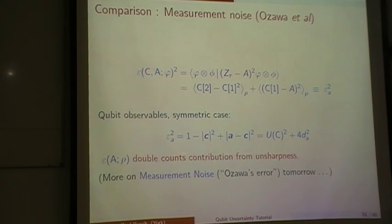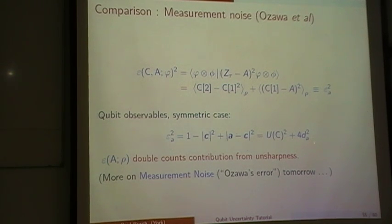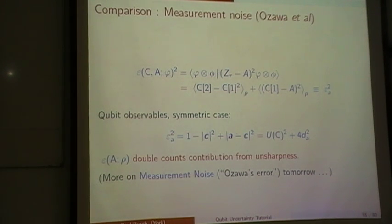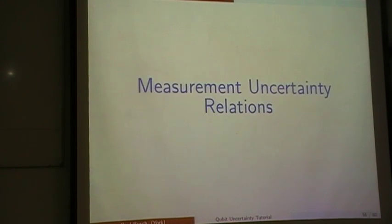Here I point only to some oddities with this concept. One is immediately visible in the qubit case with symmetric C — where C0 equals one and A is sharp — then epsilon A squared just boils down to one minus the length of C squared, plus the squared distance term. So it's really a mixed bag: it's partly a distance, but it counts in a contribution from the unsharpness of C on top of that. That in itself makes it a suspicious quantity to call an error. So we have to be careful and not buy into it too quickly. Epsilon double-counts contributions from the unsharpness of the approximator C. More on this tomorrow.